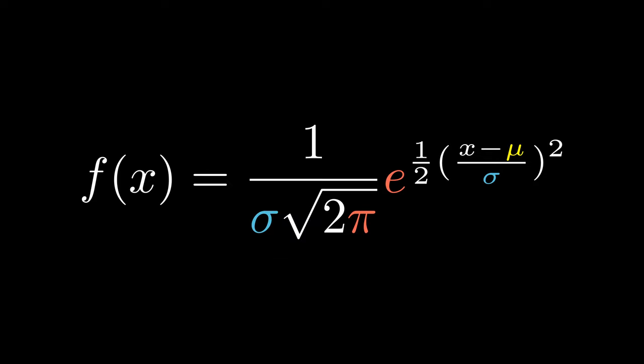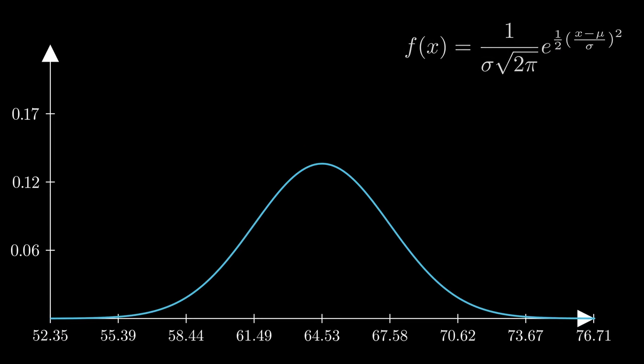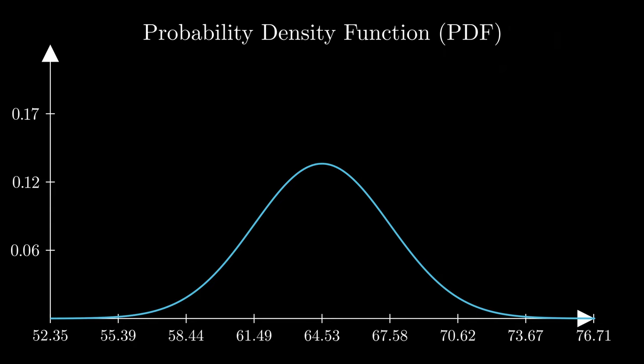This leaves us with only the x variable as our input on the x-axis and the y-axis represents the likelihood. We call this particular view of the normal distribution the probability density function, also called the PDF.